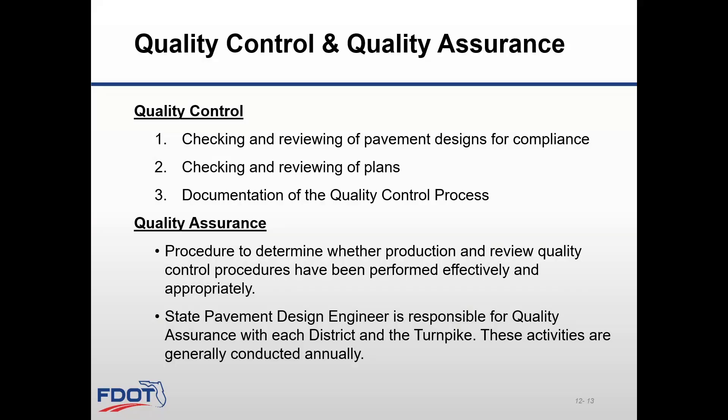The quality control process includes three main activities. First, checking and reviewing the pavement design for compliance with policies, procedures, standard guidelines, and good engineering practice. Second, checking and reviewing the plans to ensure that the approved pavement design is correctly incorporated into the plans. Third, properly document the quality control process that was followed. As a minimum, the pavement report will include a QC checklist filled out and signed by the reviewer, or maintain a pavement design quality control file by financial ID number consisting of a copy of the QC checklist signed by the QC engineer, as included in the Rigid Pavement Design Manual, Appendix B, pages B6 and B7. The quality assurance process needs to be followed for every report to ensure the quality control process is being followed for all pavement reports.